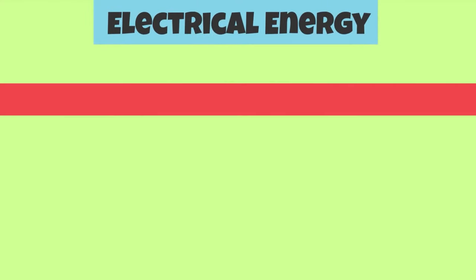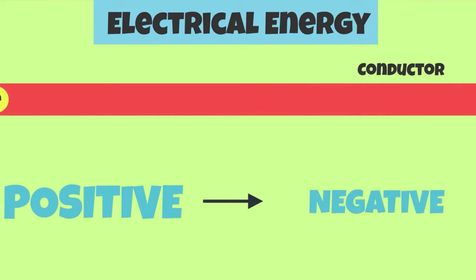Electrical energy is when energy is transferred through the flow of electrons in a conductor. An electric current is created when a charge flows from a positive to a negative.